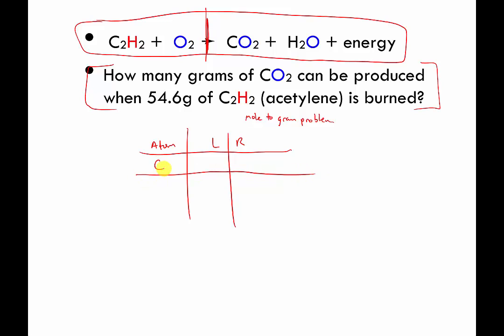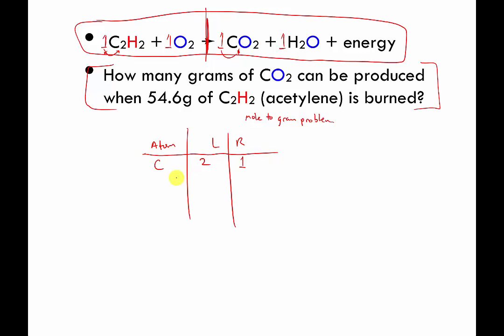How many carbons on the left? Let's put the numbers in first: one, one, one, one. How many carbons on the left? Two, because we're doing one times two. How many carbons on the right? Only one, because we're doing one times one. So we've got our first unbalanced atom. We have to fix the side that's short, so the easiest way to fix that is to double this — change this to a two. And then we have two carbons on the left and the right.